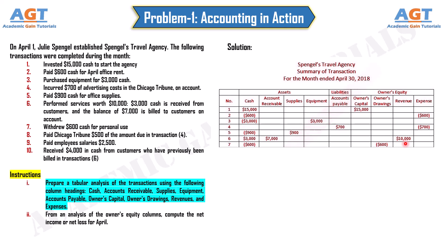Transaction 7: withdrew $600 cash for personal use. Assets in the form of cash decrease by $600. Transaction 8: paid the Chicago Tribune $500 of the amount due from transaction 4. Assets in the form of cash decrease by $500, and liabilities in the form of accounts payable decrease by $500.